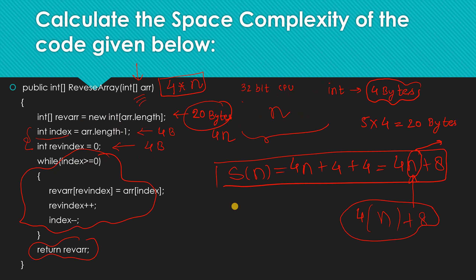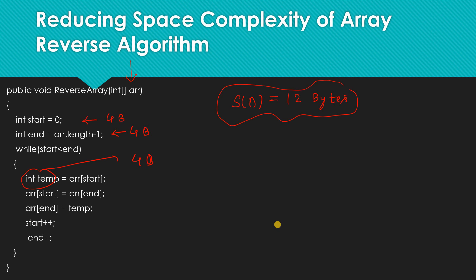In the previous program, if we pass an array with a million elements, we need memory that can contain at least a million elements because we declared an intermediate array. But in this optimized program, it is independent of the input array. So this is a more optimized program because it needs less space. That's how you can compare algorithms by calculating space complexity and know which one takes more space and which takes less.